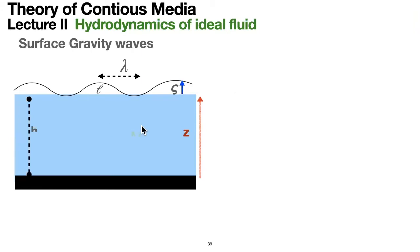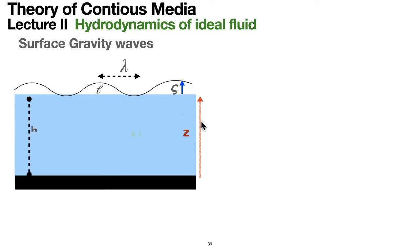We have a volume of liquid, shown here in blue, with a certain height denoted by the letter H. We have a coordinate system where X is along the screen and the Z axis is perpendicular. We have a Y axis pointing outside the picture, but we assume that the perturbations in the liquid depend only on Z and X — nothing depends on the Y axis, which is perpendicular to the screen.